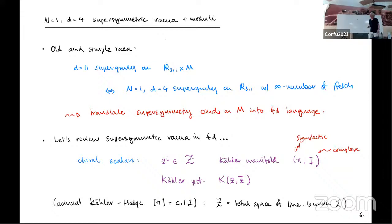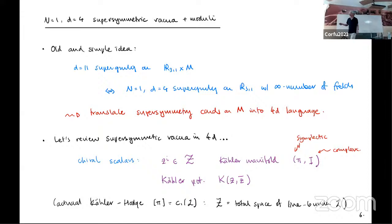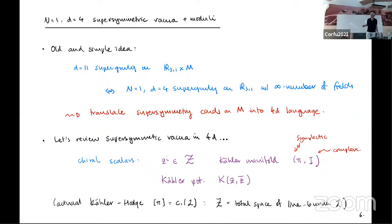The way to think about the general problem is a very old and very simple idea: if you think about 11-dimensional supergravity on a seven-manifold and keep all the Kaluza-Klein modes, you can think of it as a four-dimensional supergravity with an infinite number of fields. You should be able to translate supersymmetry — the fact that you're preserving some four-dimensional vacuum — into conditions on the manifold, just in the language of superpotentials and F and D terms.